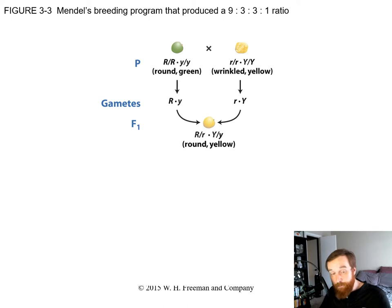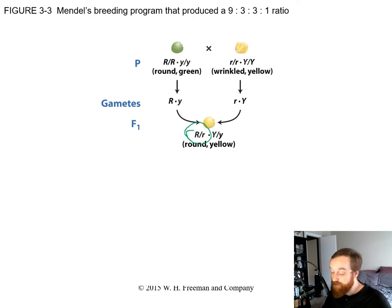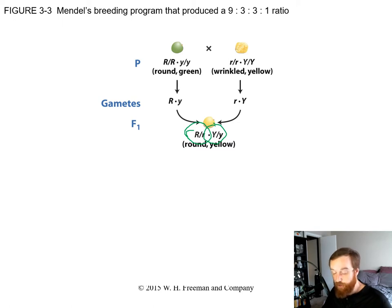When these gametes combine, we get the F1 generation — the first filial generation. In this generation, we have plants that are heterozygous for both genes. So we have the big R from the green pea plant and small R from the yellow pea plant, and big Y from the yellow pea plant and small Y from the green pea plant. We call this heterozygous — two different alleles at each gene.